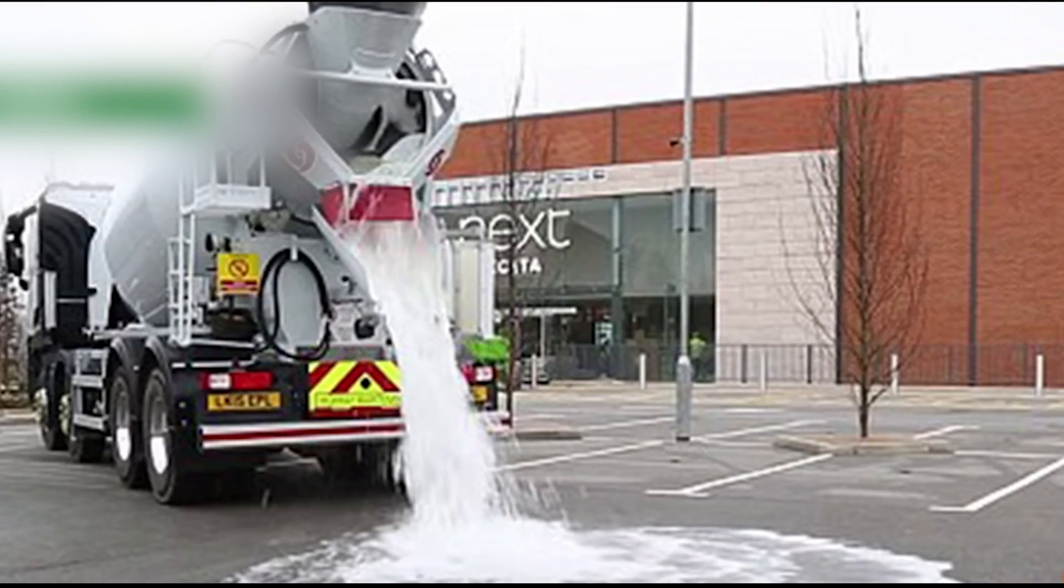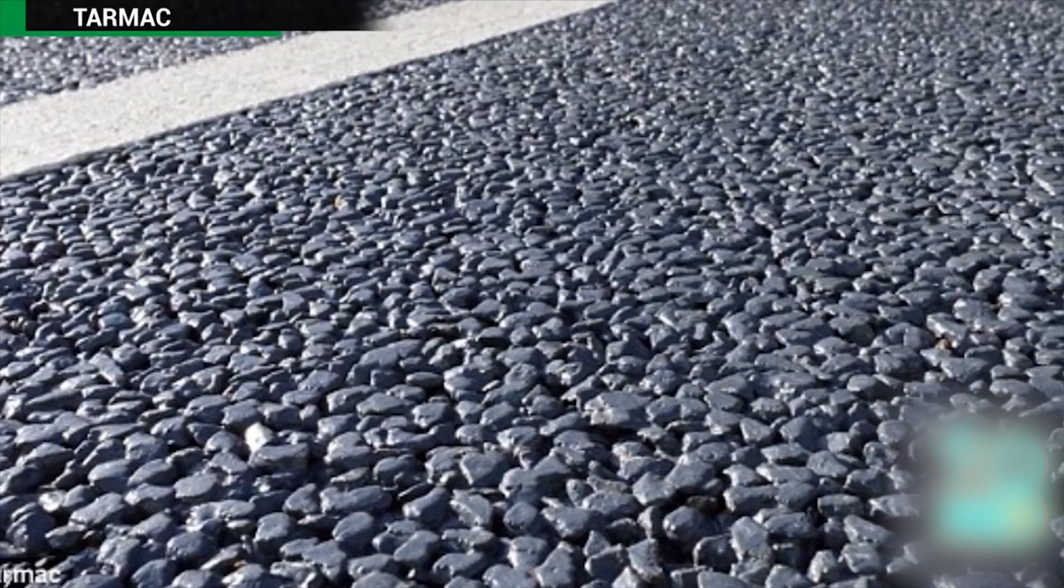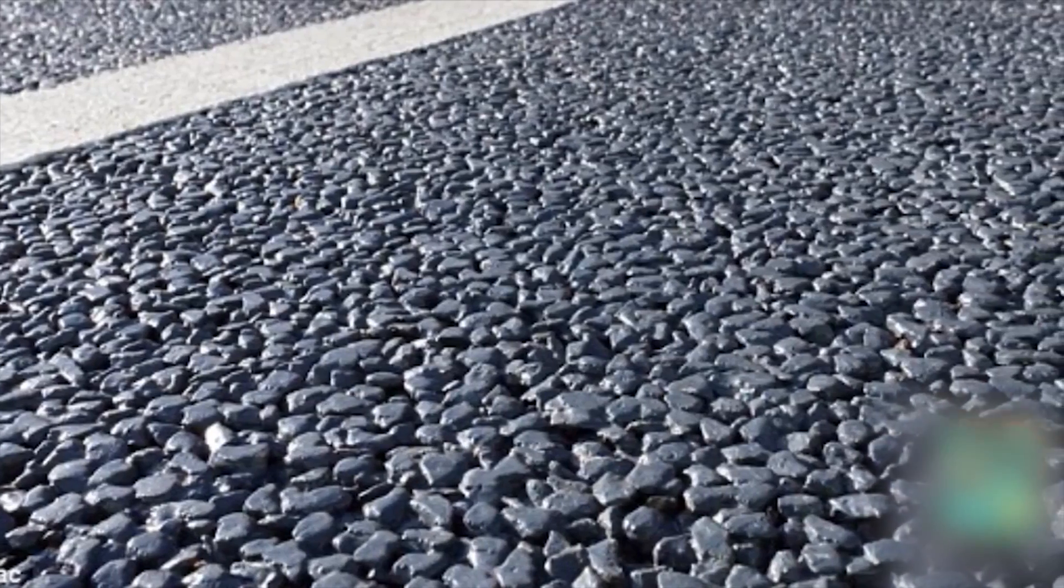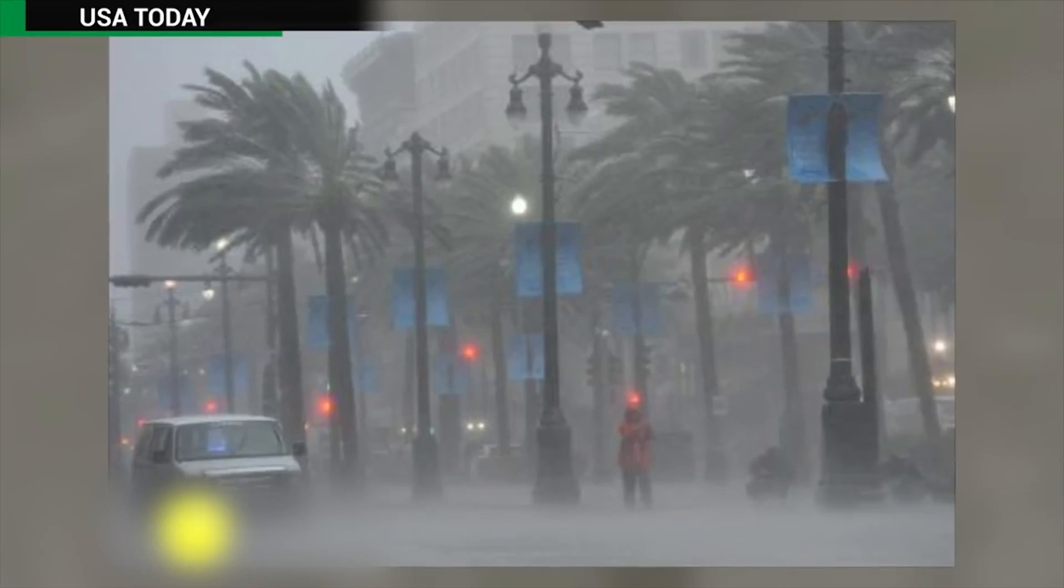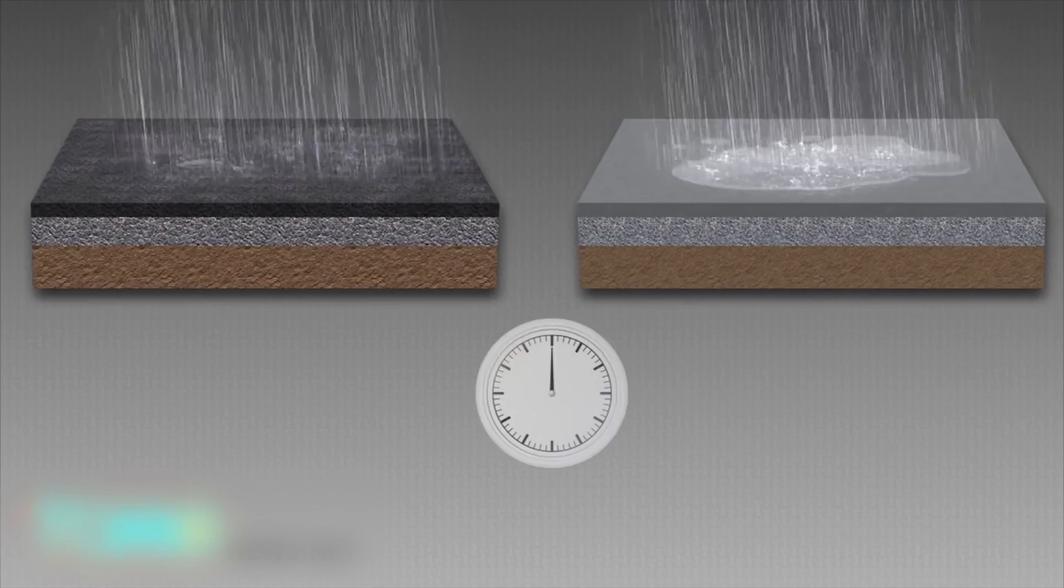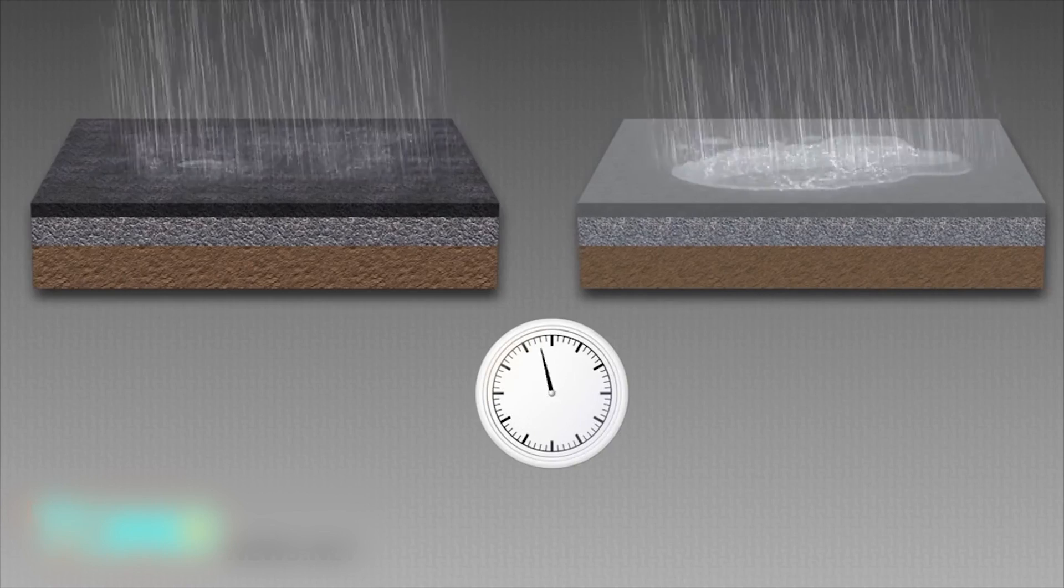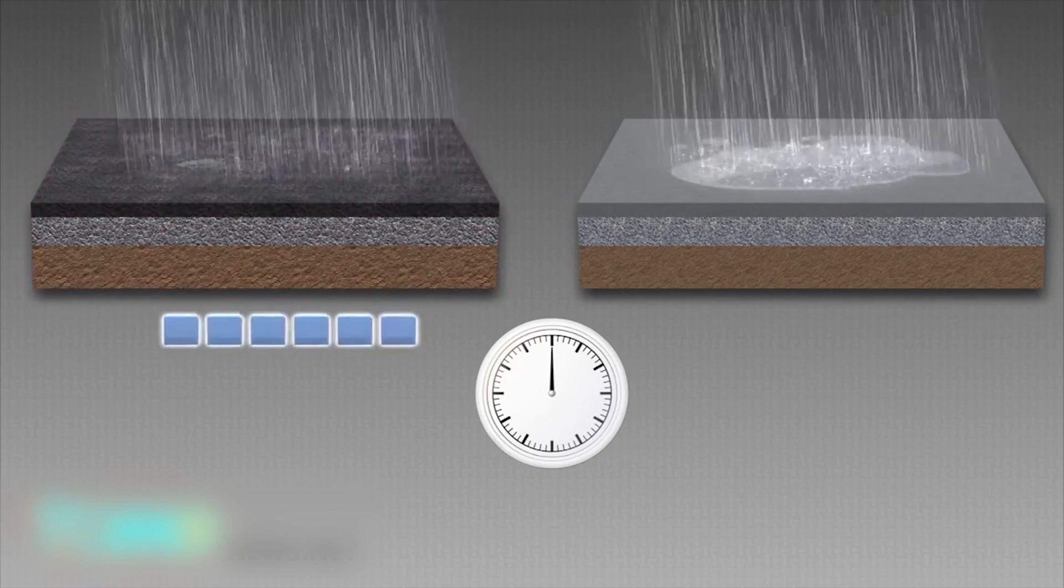New water absorbing concrete can prevent flash floods. A British company called tarmac has invented a new kind of concrete that can absorb huge amounts of rainwater during storms. The new concrete called topmix permeable allows the ground to absorb 36,000 millimeters of water per hour.